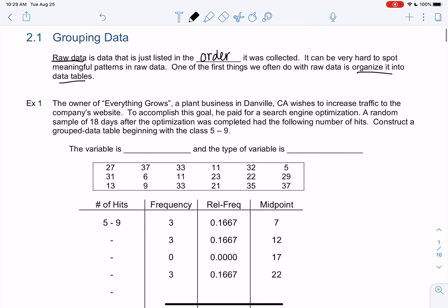Raw data is just data listed in the order it was collected. It can be very hard to spot meaningful patterns in raw data. So one thing we like to do is usually organize it into tables. We'll do graphs later in the chapter. If you look at the little table below, that's raw data. It's just numbers, there's no pattern. It's hard to come up with patterns, so we're going to reorganize it.